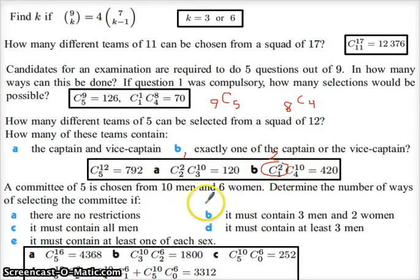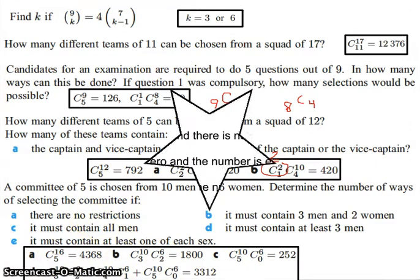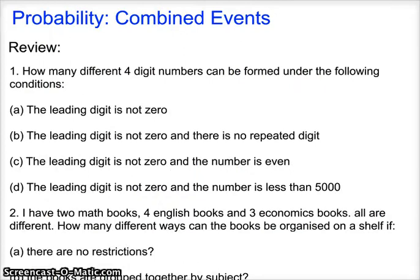Alright. Committee of five is chosen from 10 men and six women. Determine the number of ways of selecting committee if there's no restrictions. So we'll just pick five people out of the 16. Part B, it must contain. So we just did this. This is exactly the same kind of thing we just did. I don't get to bore you. I want to get done before this video runs out of time.